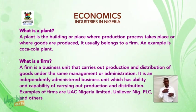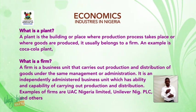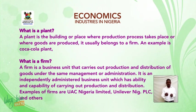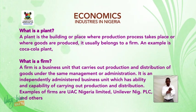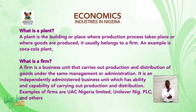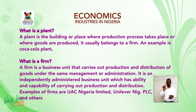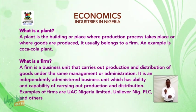Firm. A firm is a business unit that carries out production and distribution of goods under the same management or administration. It is an independently administered business unit which has the ability and capability of carrying out production and distribution. Examples of firms are UAC Nigeria Ltd., Unilever Nigeria PLC, and others.